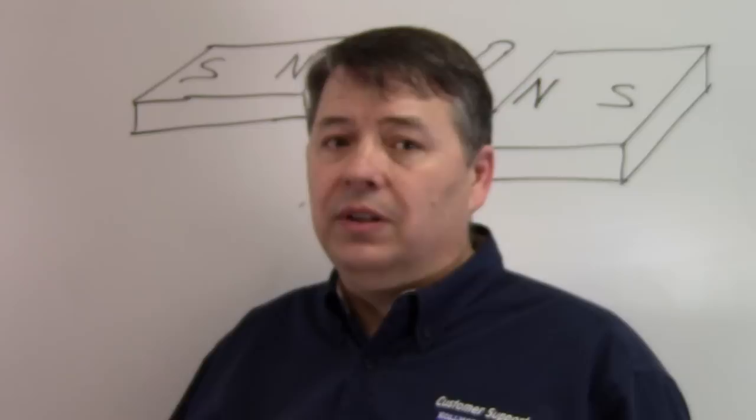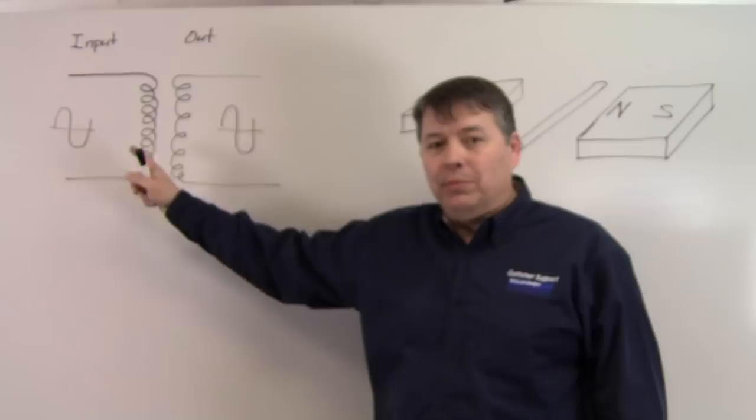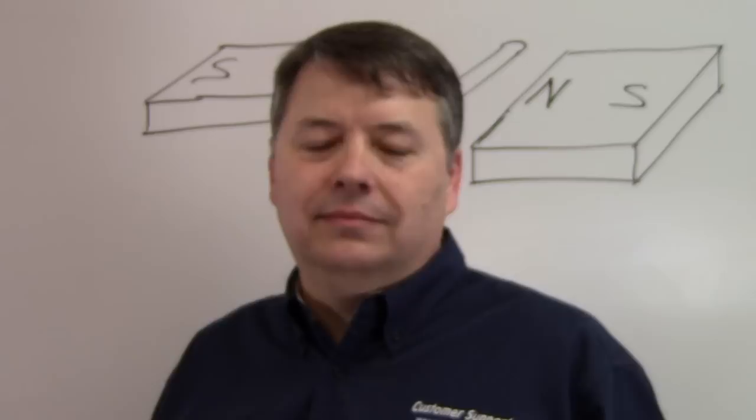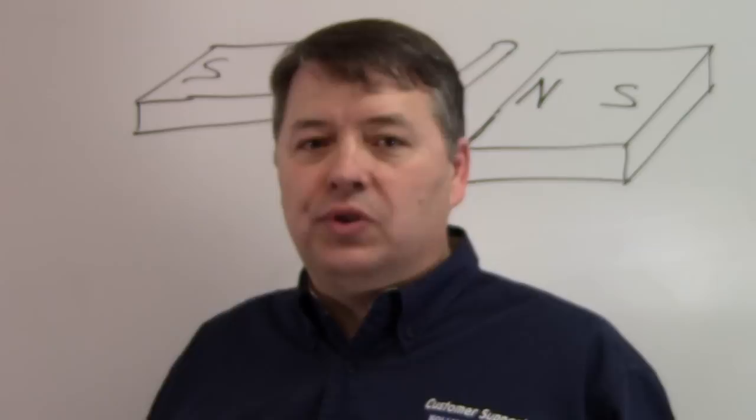When the signal is transferred from the primary to the secondary, we say that signal is coupled. If our transformer is cut in half so that the primary and secondary can move freely to each other, we will see that the output of the secondary will change relative to the position of the secondary to the primary.